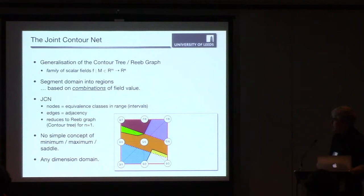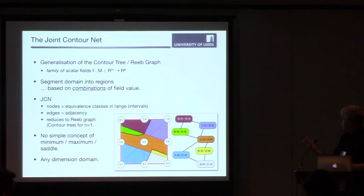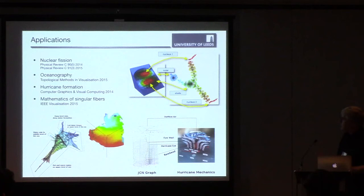So what we do is we basically subdivide the domain into regions based on assigning an equivalence between values within the region. And then we construct a graph. Here, for example, this node in the graph corresponds to this region over here. It's all those parts of the domain where the combination of the first field lies in the value of 6 to 9, and the second field also lies in the value of 6 to 9. There's no simple analogy of the minima and maxima and saddle points within the contour tree, but it's still surprisingly useful.